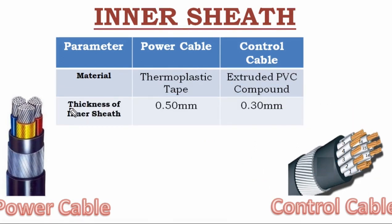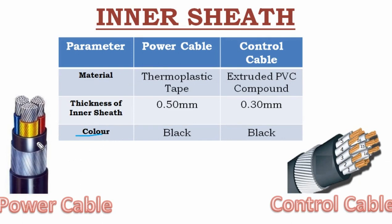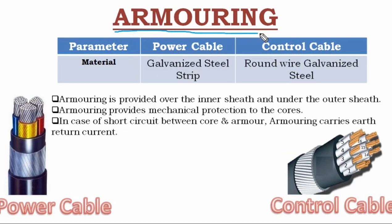The second parameter of the inner sheath is its thickness. In the power cable, the thickness of the inner sheath is 0.5 mm, and in the control cable it is 0.33 mm. The third parameter is color — the inner sheath color is black for both the power cable and the control cable.